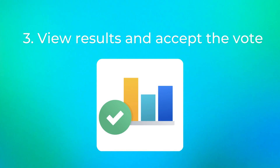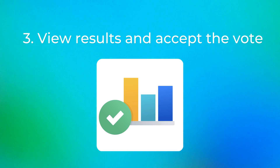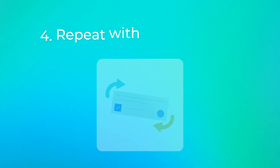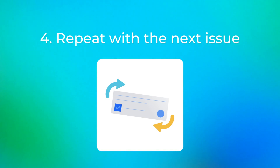Once everyone votes, you can reveal the results and see the average votes for each metric. This way, everyone gets to contribute to the final decision making about the priority of the task. When everyone is happy with the results, accept them and move on to the next issue. Sounds simple — so now let me show you how to run priority planning poker in Foxly.